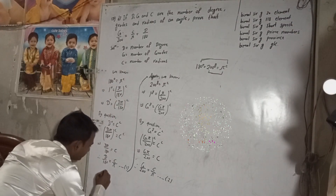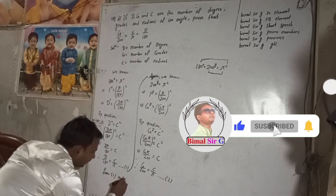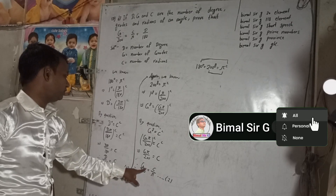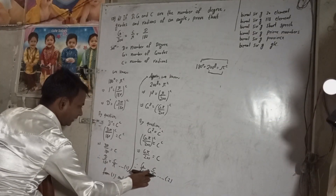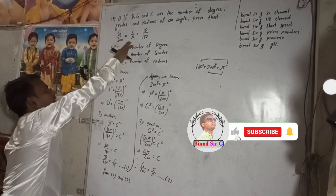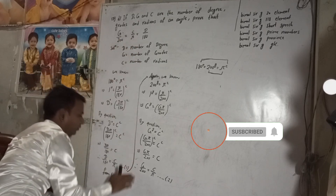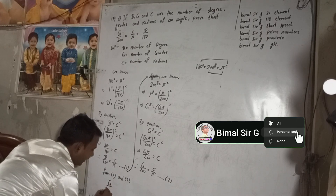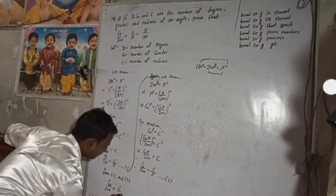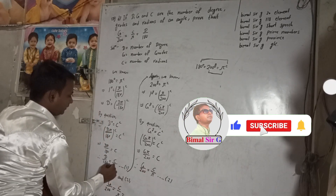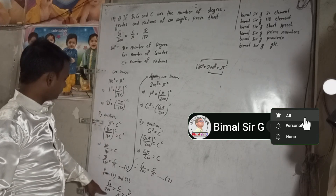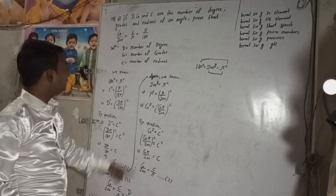Now from equation one and equation two, we have C by Pi is equal to D by 180, and C by Pi is equal to G by 200. Both are the same, so we can write: G by 200 is equal to C by Pi is equal to D by 180. This is our required solution.